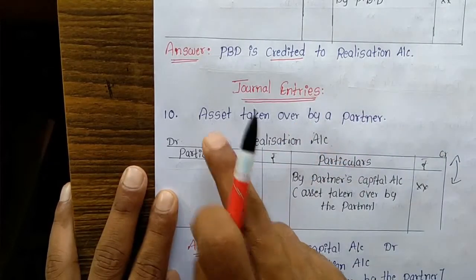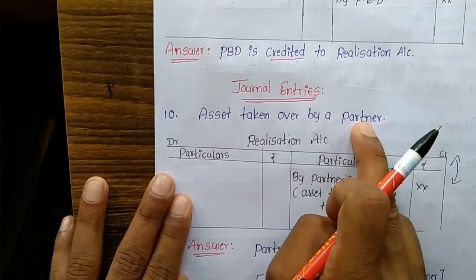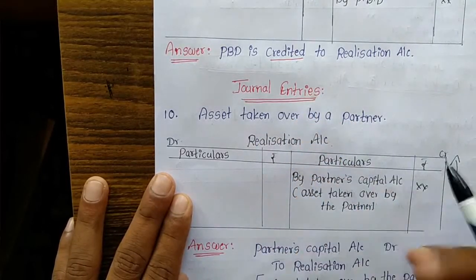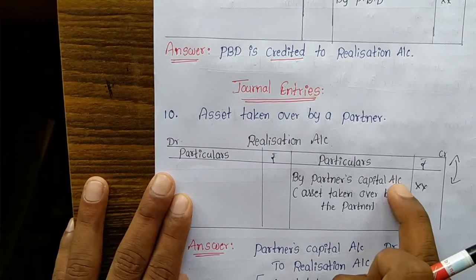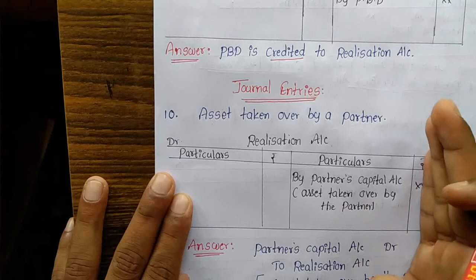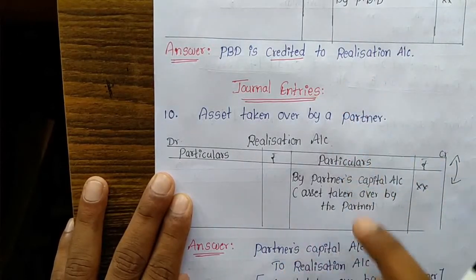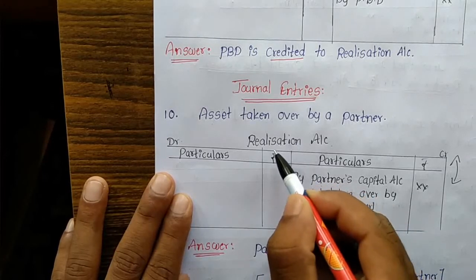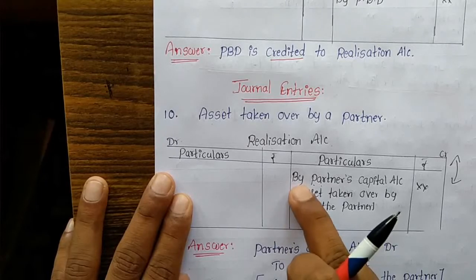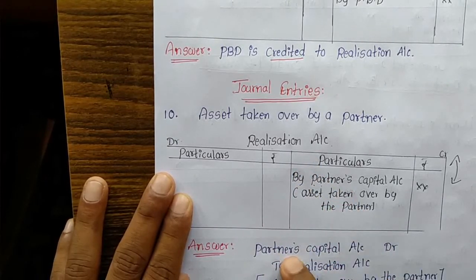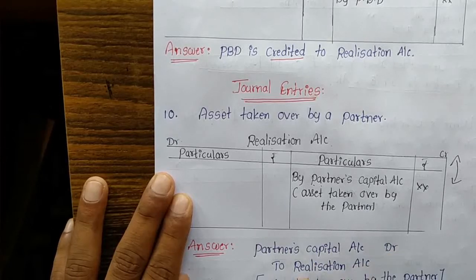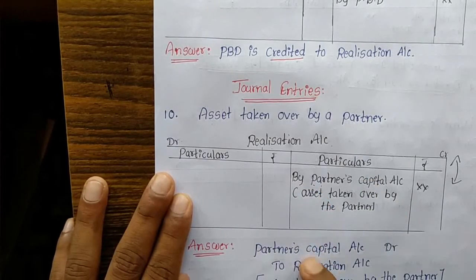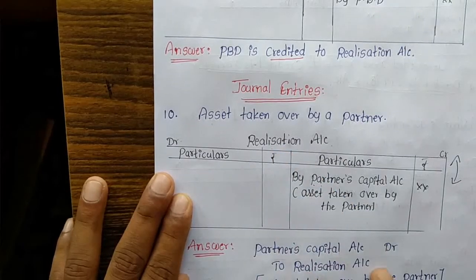For an asset taken over by a partner on dissolution: first, you debit the Realization Account, and credit the Partner's Capital Account. When a partner takes over an asset, the entry passed is: debit Realization Account, credit Partner's Capital Account. The asset is taken over by the partner at the agreed value.